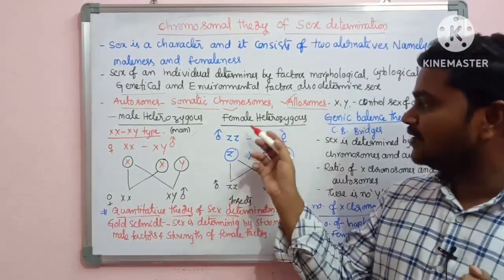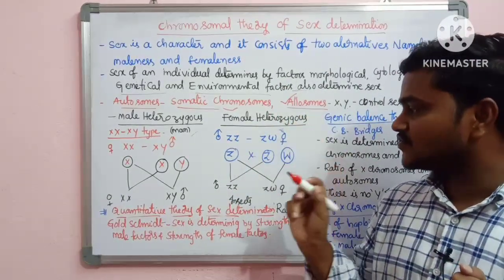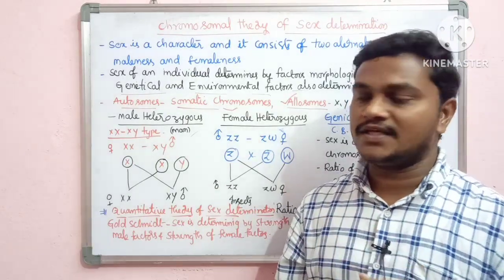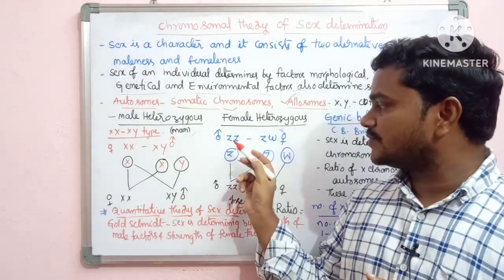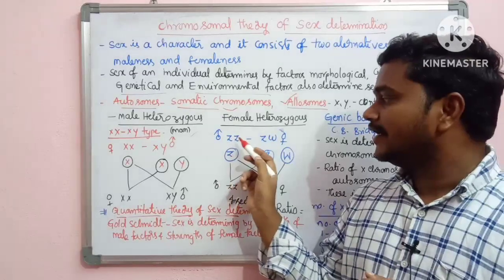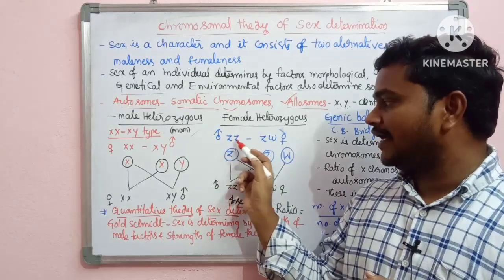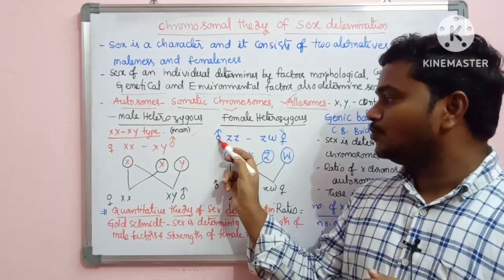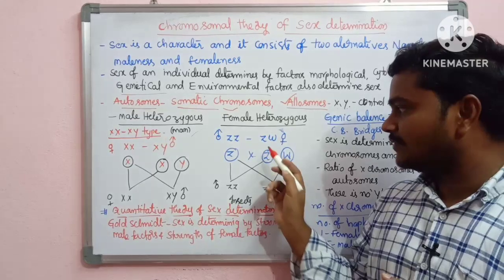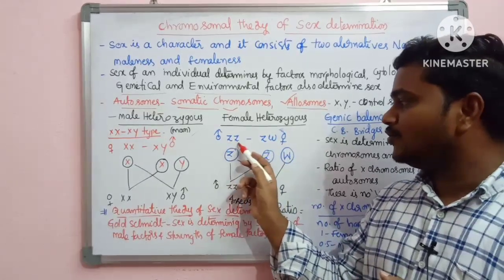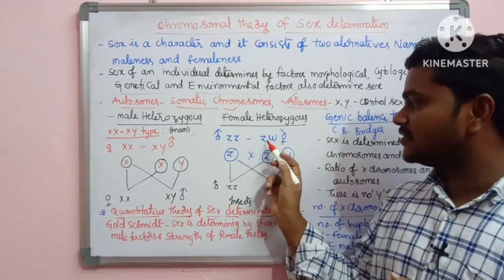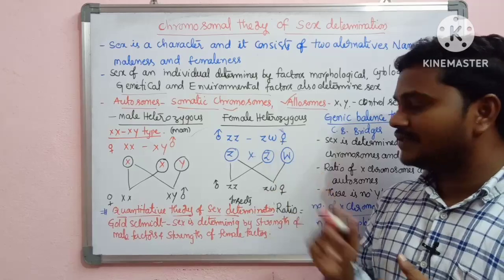In the female heterogamety system, we consider the ZW chromosomes. The male is the homogametic person with ZZ chromosomes, and the female is the heterogametic person with ZW chromosomes.